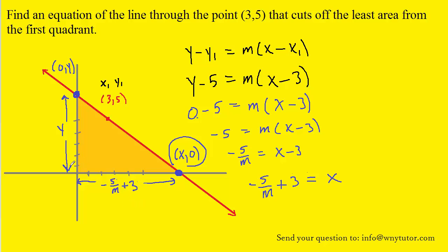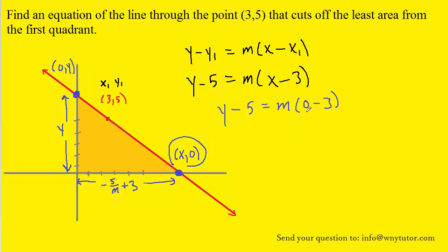We can do something very similar with the y-intercept. We plug 0 in for x in our equation and y in for y. We subtract 0 and 3, then add 5 to both sides. The y-distance of our triangle can be represented as negative 3m plus 5. Let's label that on our diagram.